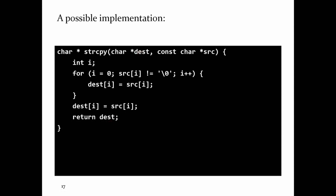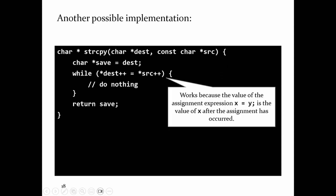strcpy is a bit funny — it also returns the pointer dest. The reason it does this is so you can chain a bunch of function calls: copy a string into dest, then call another function passing in the result of strcpy. Here's that dereference post-increment trick again combined with another thing in C. strcpy returns the pointer dest, so I need to remember the original value of dest so that I can return it. Notice the loop condition looks strange — that's an assignment operator, not a comparison. Hopefully this throws up red flags: normally you'd expect == or some comparison operator, but it turns out this loop does in fact work.